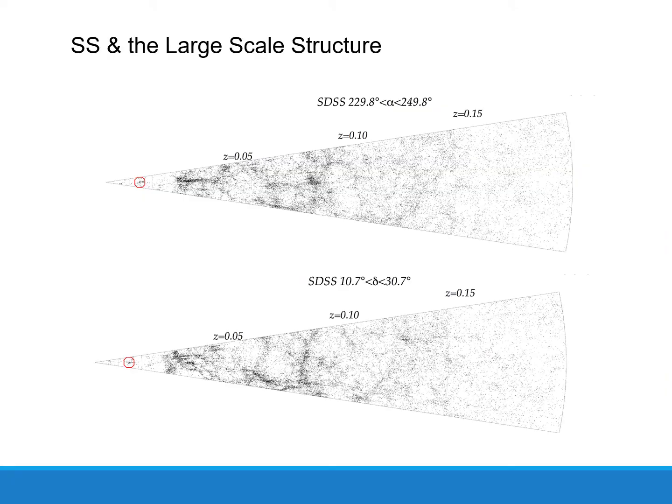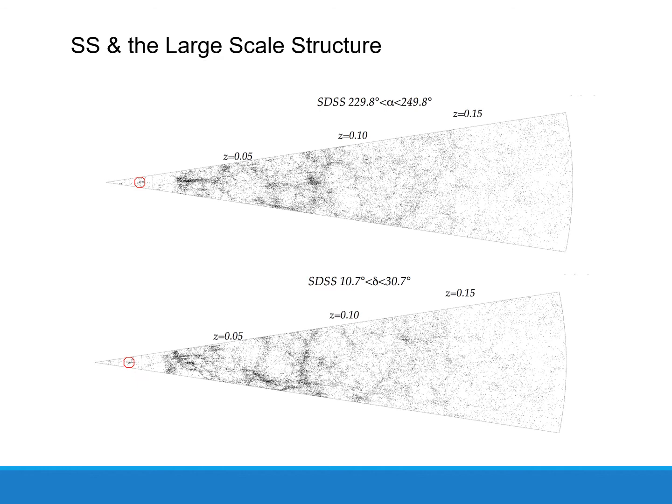Where do we find Seyfert's Sextet? You can find it within the SDSS survey and see that it is more or less isolated. This nearby system was already reported by Díaz-Giménez, Saldaño, Merchan, and Muriel in 2005.